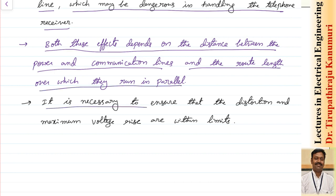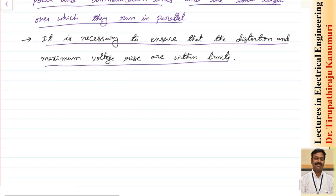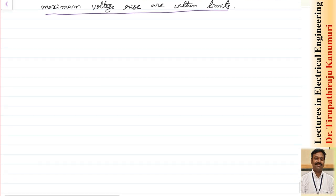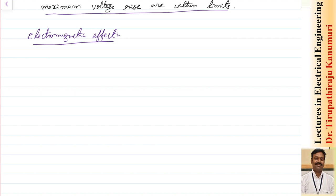Both these effects depend on the distance between the power and communication lines and the route length over which they run in parallel. It is necessary to ensure that the distortion and the maximum voltage rise are within limits. Let us now look at the electromagnetic effect of the line in detail.